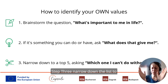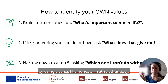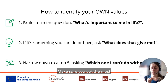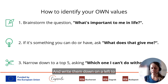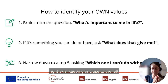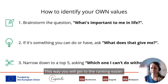Step three: narrow down the list to a top five, grouping connected words together using slashes — like honesty/truth/authenticity. Put the most important words at the front, ranking these values. Ask yourself, 'Which one can I not do without?' and write them on a left-to-right axis, keeping the ones that matter most as close to the left as possible. This way you will arrive at your ranking more easily.